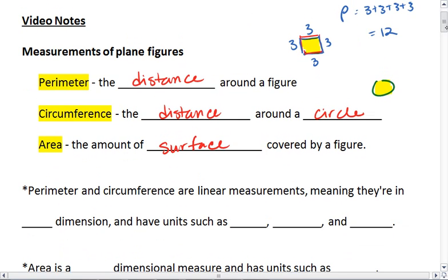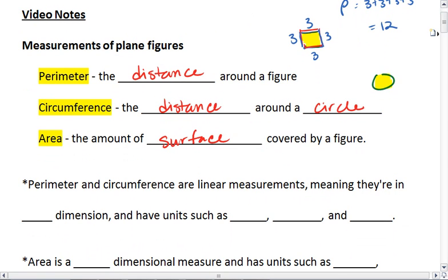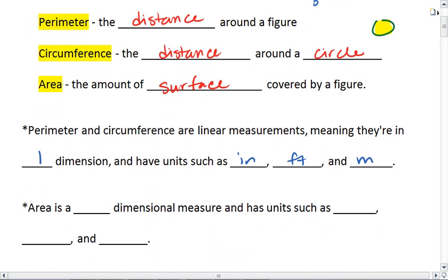It's important to note that perimeter and circumference are linear measures, meaning they're in one dimension, and have units such as inches, feet, or meters. Area, however, is a two-dimensional measure and has units such as inches squared, feet squared, and meters squared.